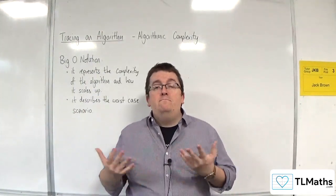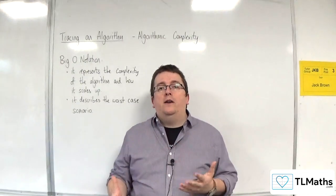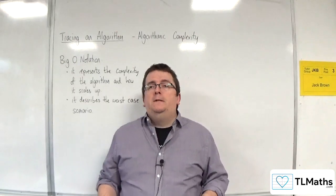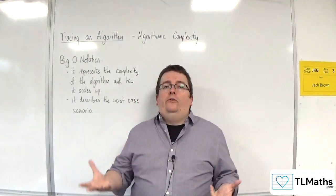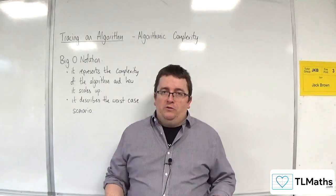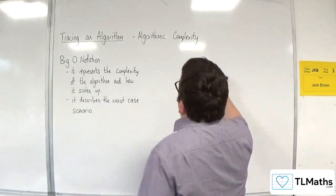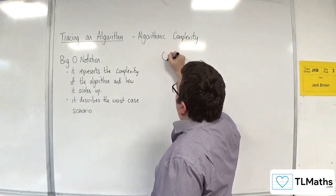We need some way of measuring which one is going to be faster than the other. Now, in order to represent that, we use what's referred to as big O notation. So big O notation is going to look something like this.